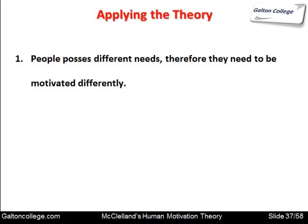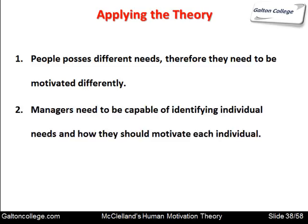Applying the theory: people possess different needs, therefore they need to be motivated differently. It's important to recognise which needs are dominant in people and try to fulfil those needs. Managers need to be capable of identifying individual needs and how to motivate each individual, allocating each person to a situation that will maximise their interest in work, their productivity, and their application — because they're working in a situation where their needs are being met, whether affiliation, power, or achievement.